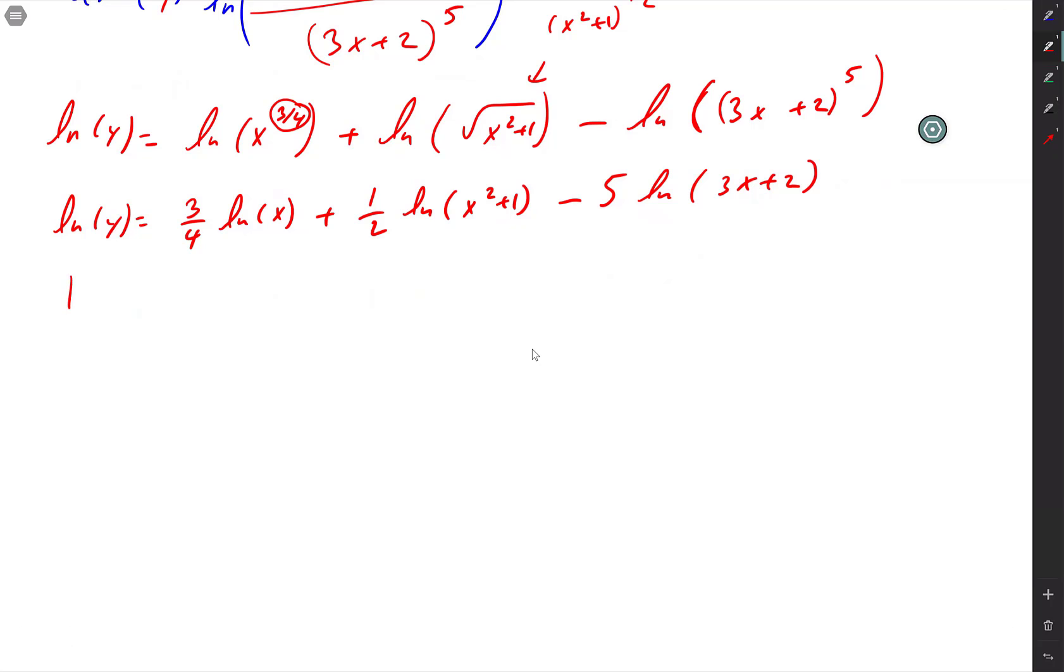Oh, did you guys forget? 1 over y times dy/dx equals, that 3/4 is a constant, leave it alone. So 3/4 times the derivative of ln of x is 1 over x. In a little bit we'll start joining stuff in there. Okay, plus 1/2 times the derivative of ln of x squared plus 1 is 1 over x squared plus 1 times, times what? 2x minus 5.